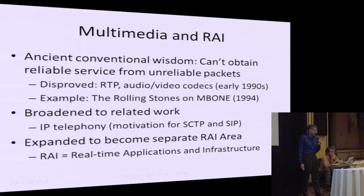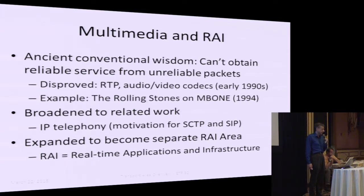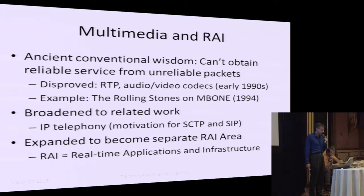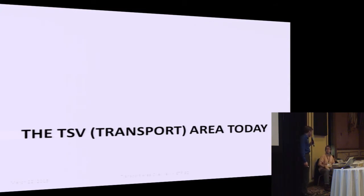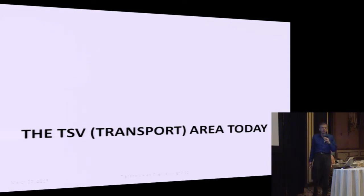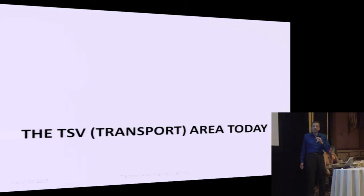This was a motivation for both SCTP — a big one being that TCP had a head-of-line blocking problem, which is a problem for telephony signaling. SCTP is a datagram protocol that recognizes multiple streams of datagrams inside a single protocol session and can avoid head-of-line blocking. SIP, the session initiation protocol, is the primary signaling protocol used for IP telephony. All of this expanded to become a separate RIE area — real-time applications infrastructure.